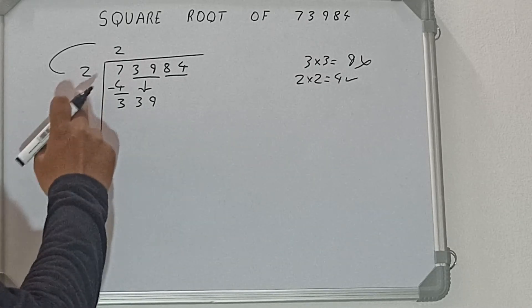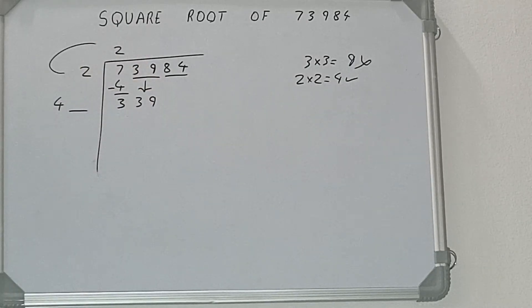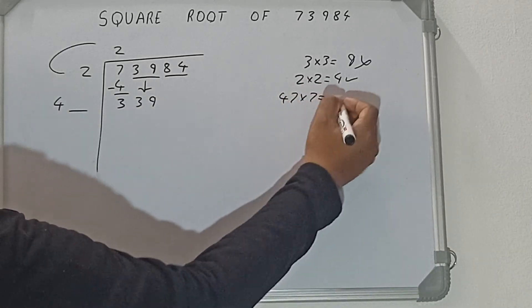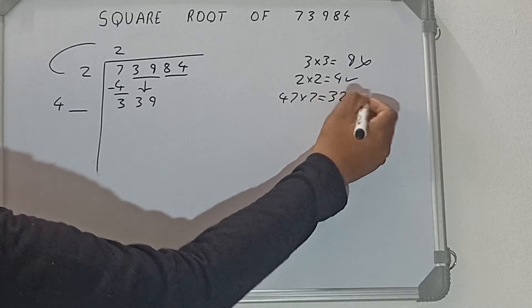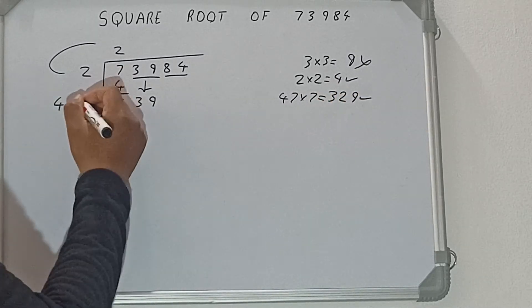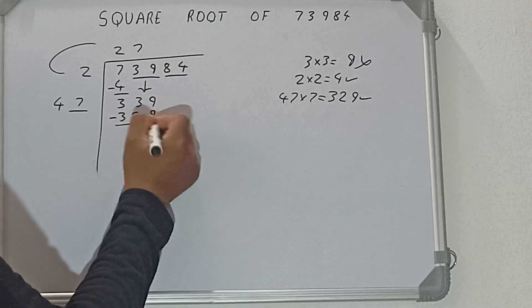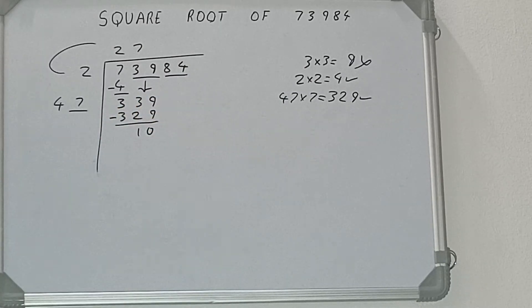Now whatever number we write here we need to write here also. So if we try 7, that is 47 into 7, it will be 329 which is good to take. So 7 here and 7 here, 329 subtract, 10 will be left. Now 47 into 7 we did, so add both.